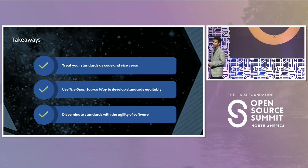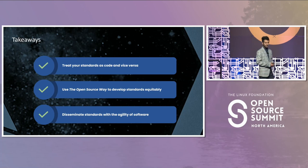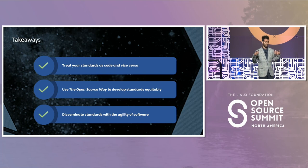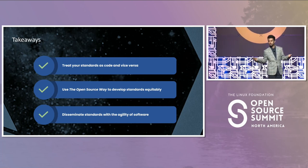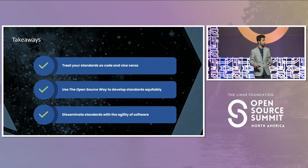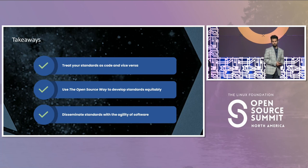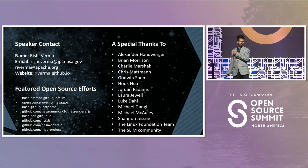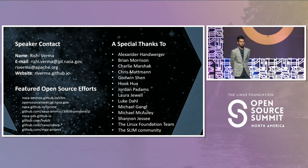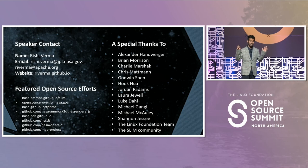So, what are the takeaways? First, treat your standards as code and vice versa — I hope I've convinced you of that. The second is to leverage the open source way for your standards to ensure equity and development parity with respect to all people involved. And finally, disseminate your software standards just like you do with your code — through pull requests and through the open source way — as that scales really well. Thank you all very much. Speaker contact information is up there as well as a list of some open source projects. I encourage you all to reach out to me if you have interest. Thank you all so much, and enjoy your Friday.